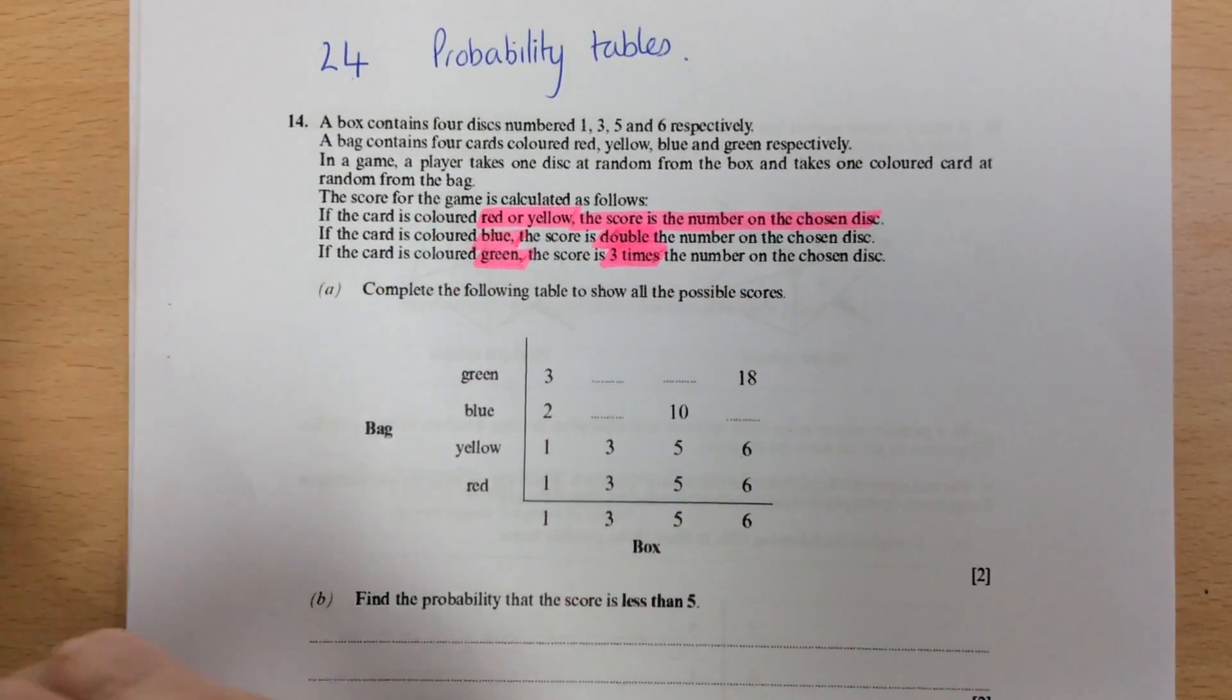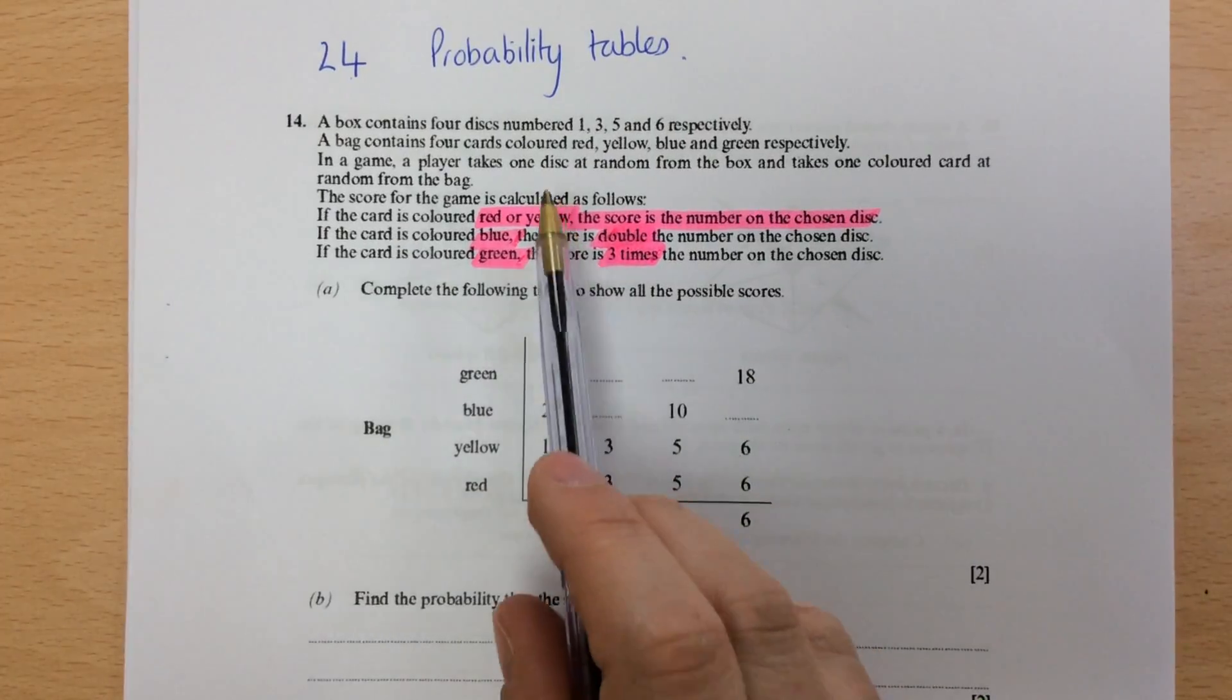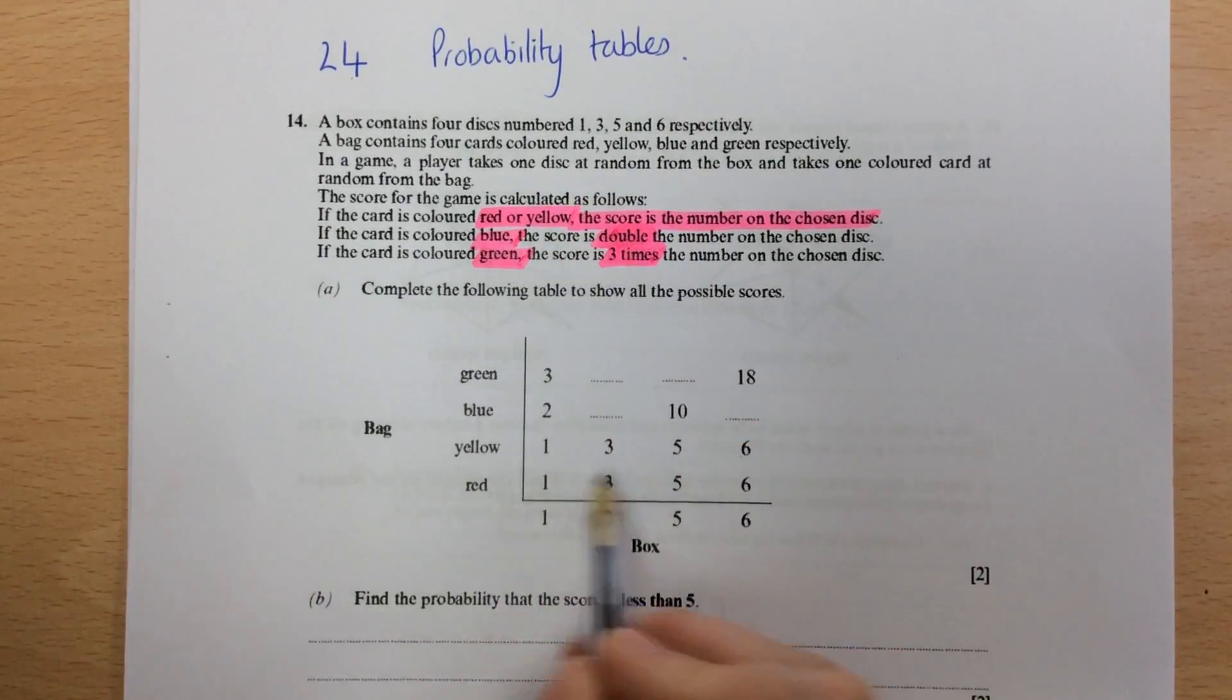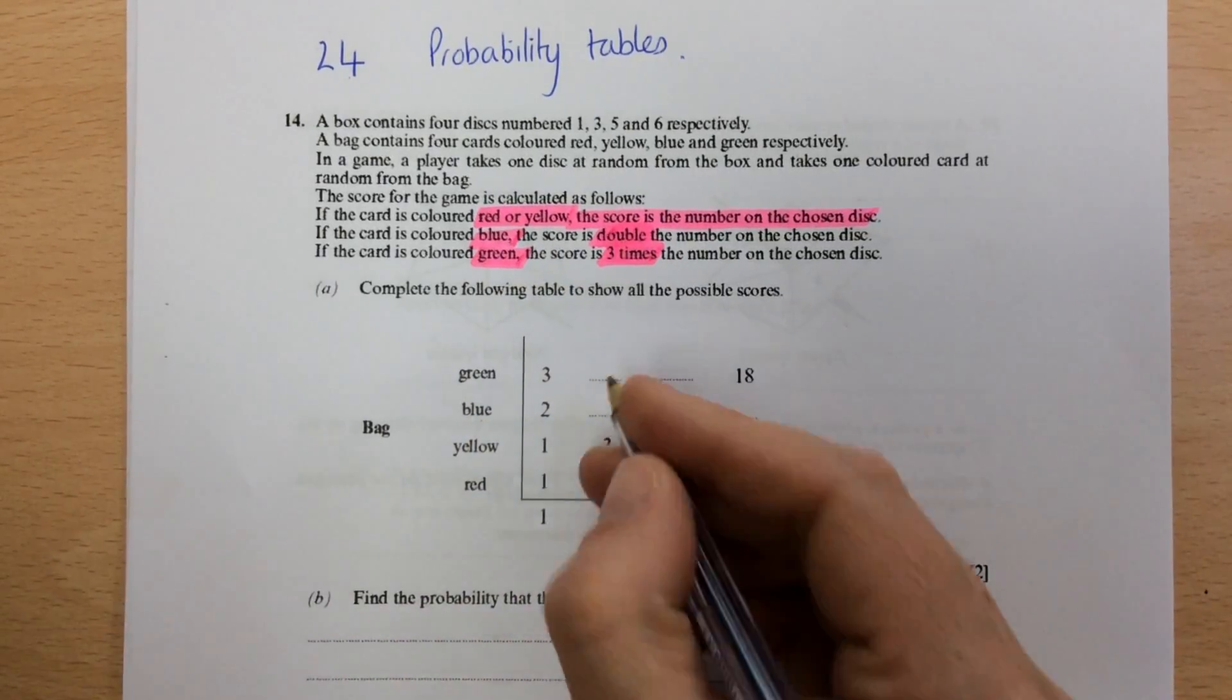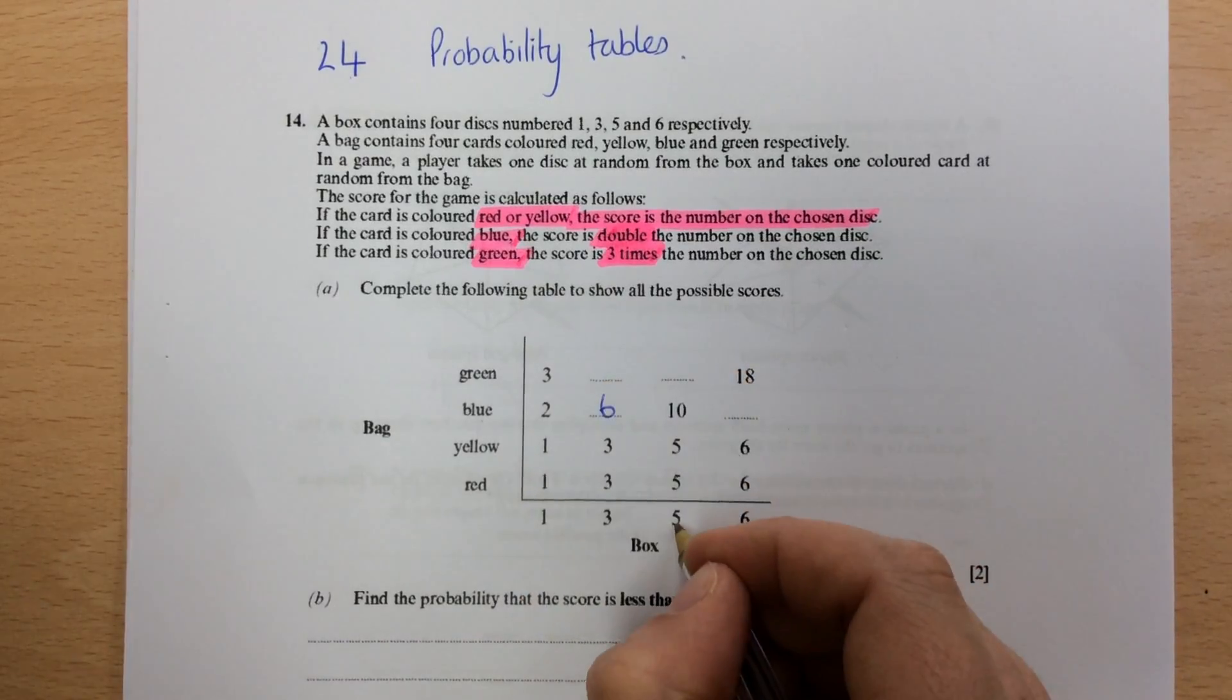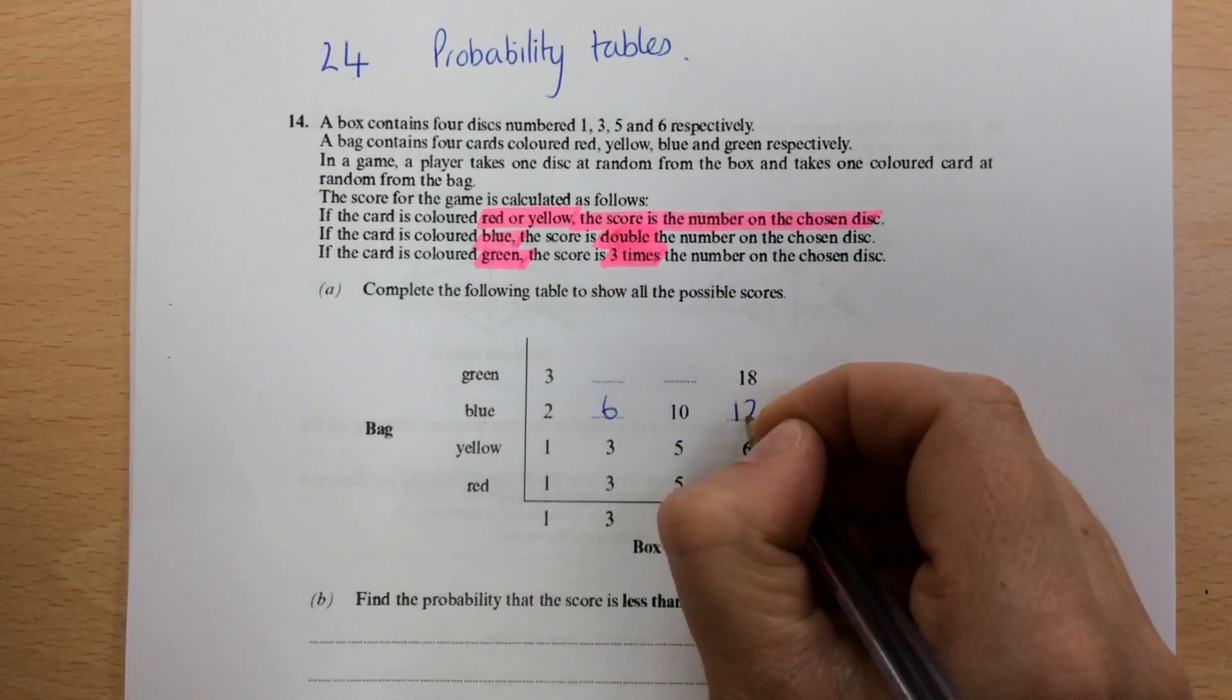So in order to answer the question, you've got to read the first bit. So red and yellow have been done for us, it's just the same. Now if you've got a blue, you double the score. So three is doubled to six, and five is doubled to ten, and six is doubled to twelve.